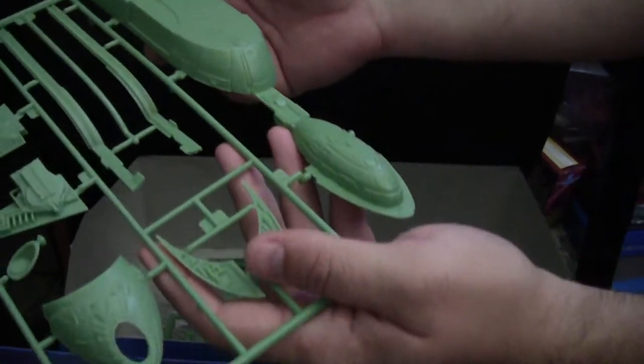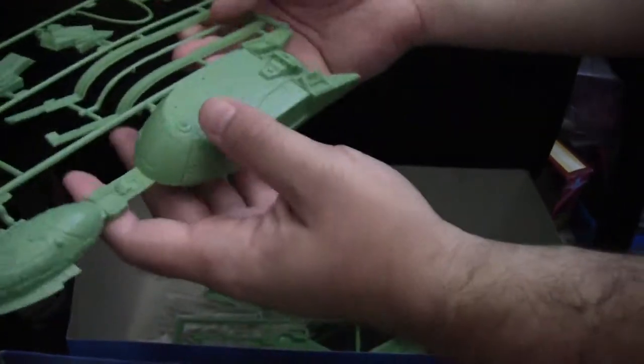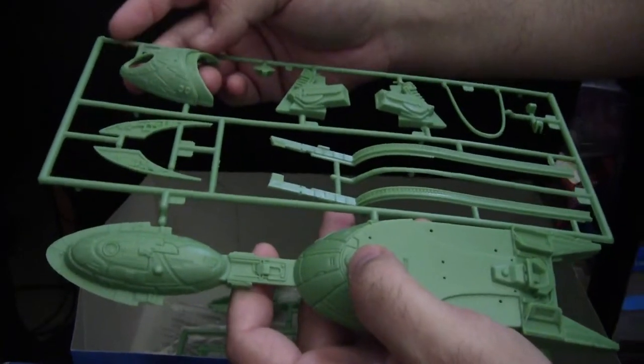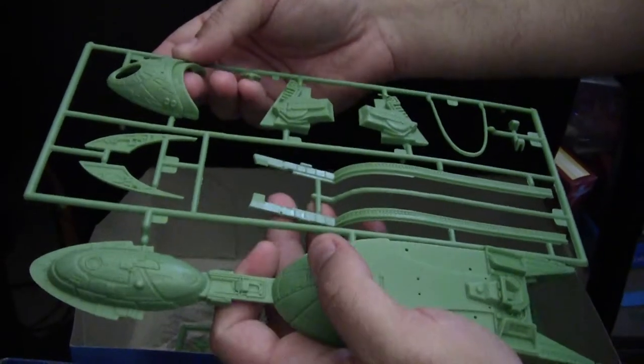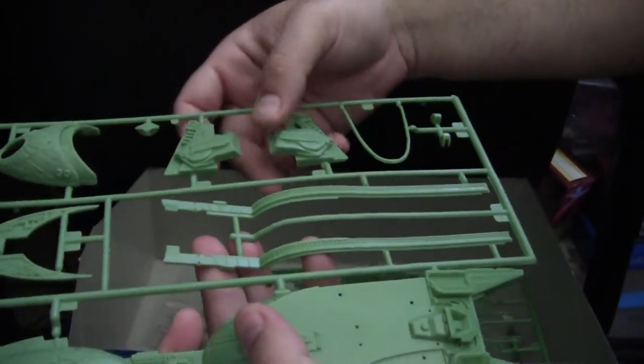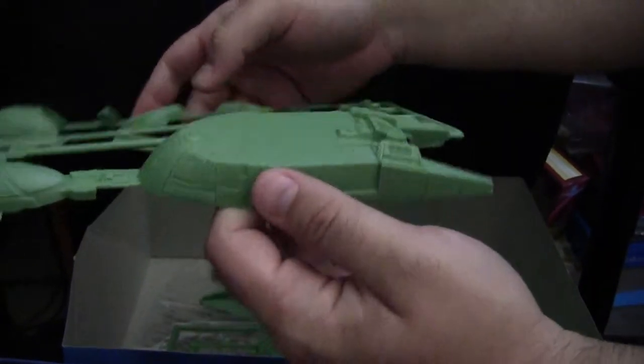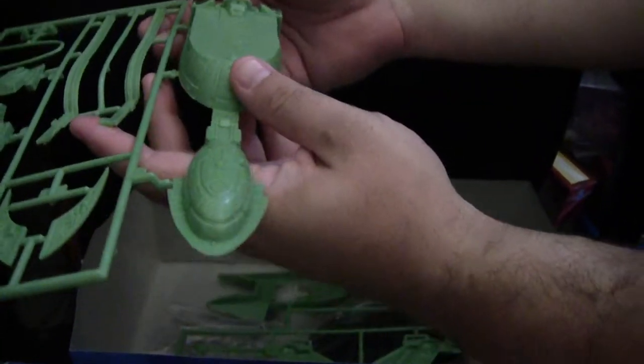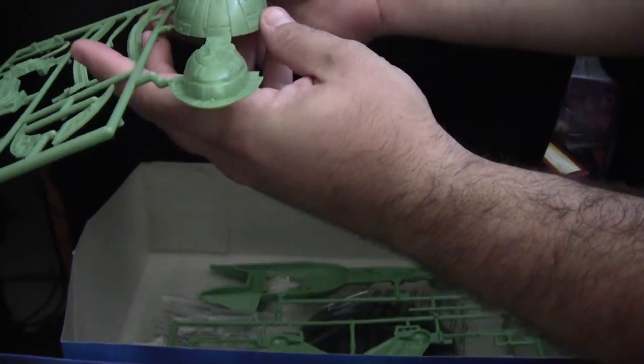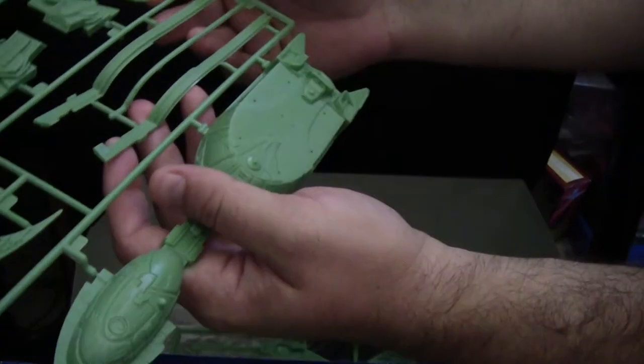Moving on, we've got our upper hull half as well as the Photon Torpedo launcher, a couple other detailing parts which are all nicely done and definitely give the kit a very nice look to her.